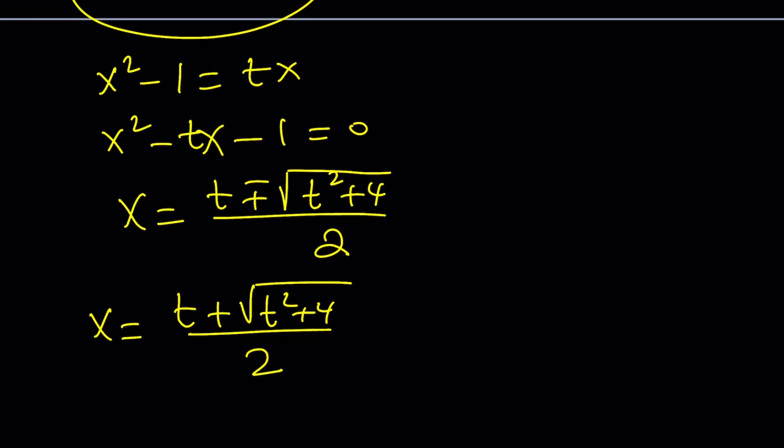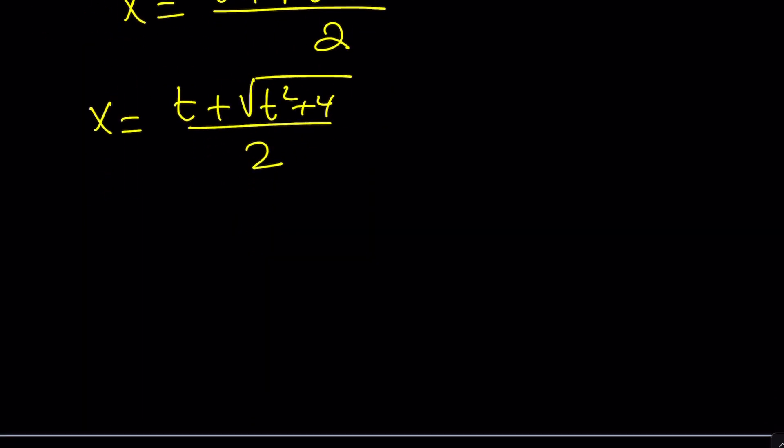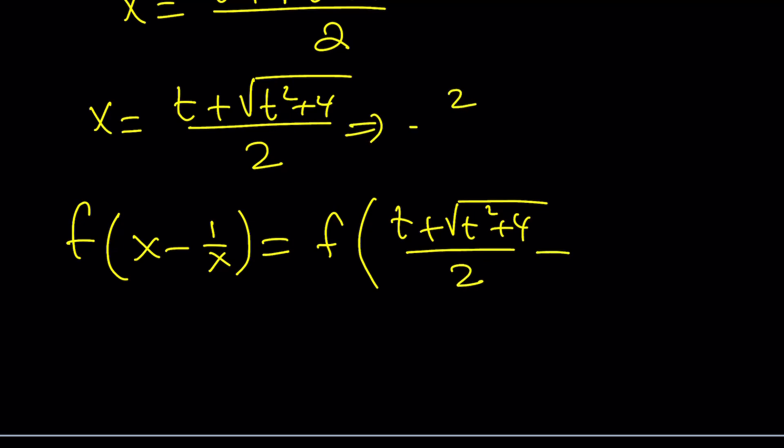And now our goal is to replace x with that on both sides. Obviously, you don't have to worry about the left-hand side, even though you can still do it. So, what is this going to turn into? You're just going to replace x with this, right? But then a good question would be, what is 1 over x? So, if you flip this, you're going to get that.